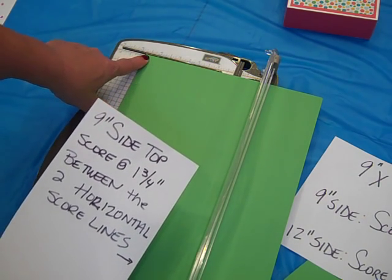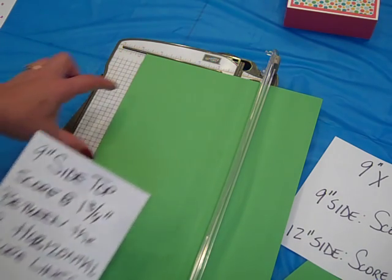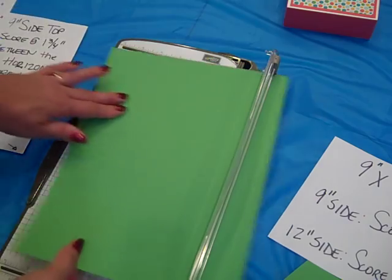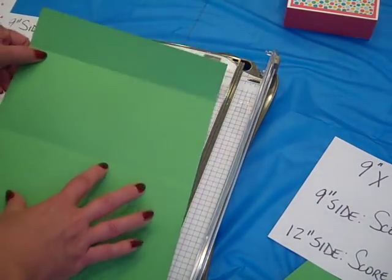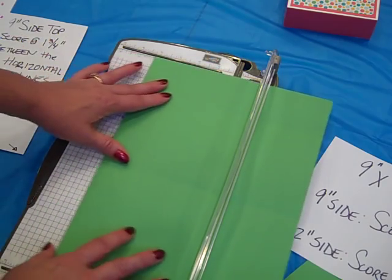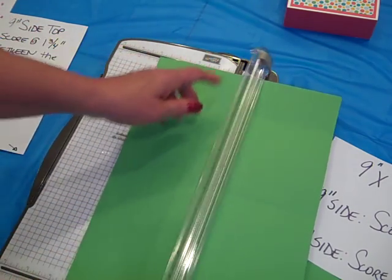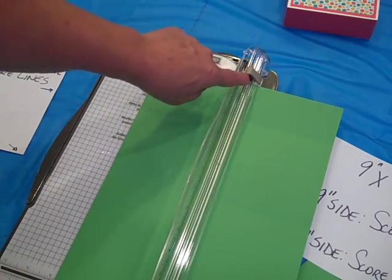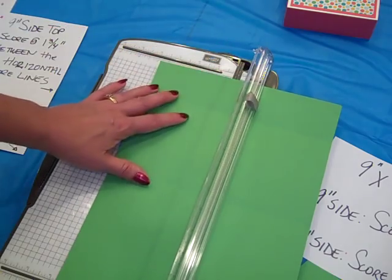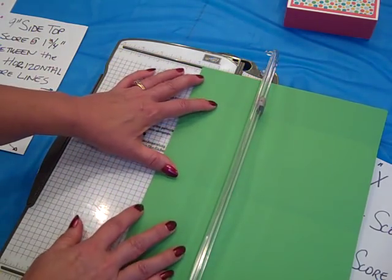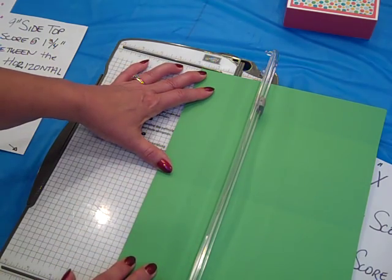So with the 9 inch side at the top we're going to score at 1¾ between the two horizontal lines. And why don't I just fold those really quickly here so that you can see what I'm talking about. What we want to do is we're going to score between these two points. So you want to make sure that you definitely have your lighter scoring blade so that it doesn't cut.